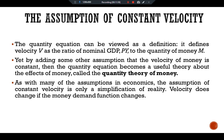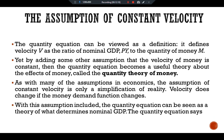Assuming velocity is constant, the quantity equation becomes a theory of nominal GDP. The quantity equation says M × V̄ = PY, where V̄ (V-bar) means velocity is fixed. Therefore a change in the quantity of money M must cause a proportionate change in nominal GDP (PY). If velocity is fixed, the quantity of money determines the dollar value of the economy's output.